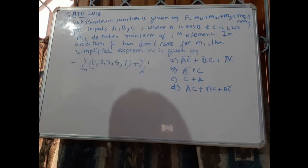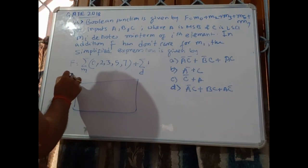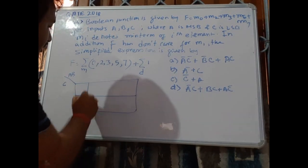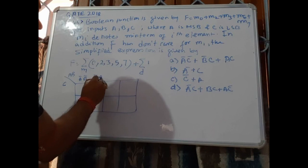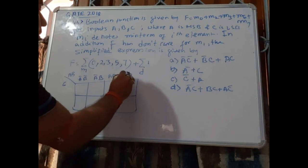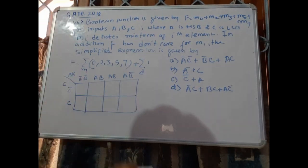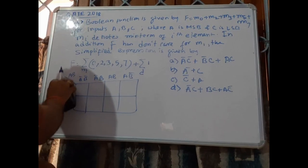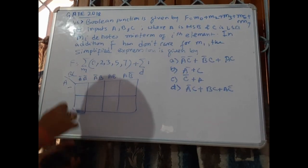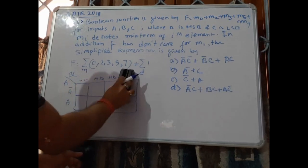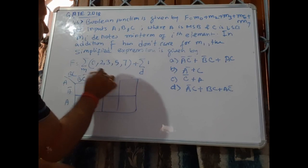We can use a Karnaugh map for that. In this direction we have a, b and in this direction we have c. The cells are: ā b̄, ā b, ab, and ab̄. One correction: since a is MSB and c is LSB, the axes should be a on one side and bc on the other. So we have ā and a along one axis, and b̄c̄, b̄c, bc, bc̄ along the other.